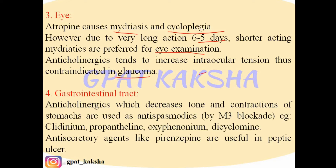On the gastrointestinal tract, anticholinergics decrease tone and contraction of the stomach and can be used as antispasmodics. Spasm is a painful contraction, and antispasmodic action is obtained through M3 receptor blockade. Drugs used for antispasmodic action include clidinium, propantheline, oxyphenonium, and dicyclomine. Anti-secretory agents like pirenzepine are useful in peptic ulcer, as anticholinergics produce the opposite of the secretion-increasing effect of cholinergic drugs.